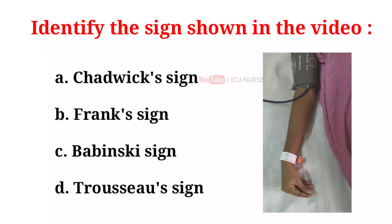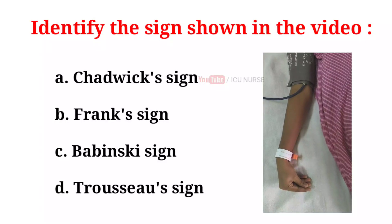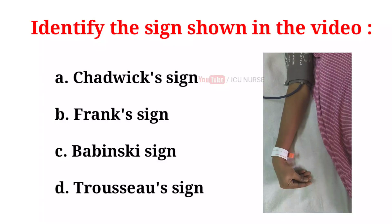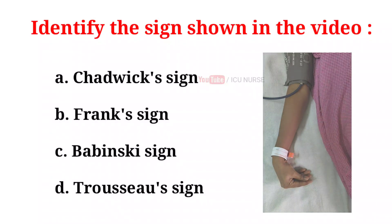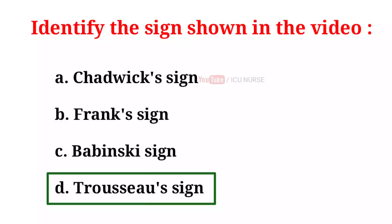Identify the sign shown in the video. A. Chadwick sign. B. Frank sign. C. Babinski sign. D. Trousseau sign. And the correct answer is D. Trousseau sign.